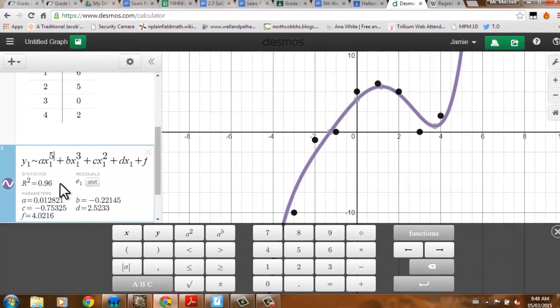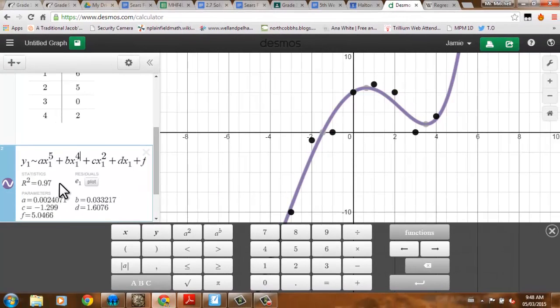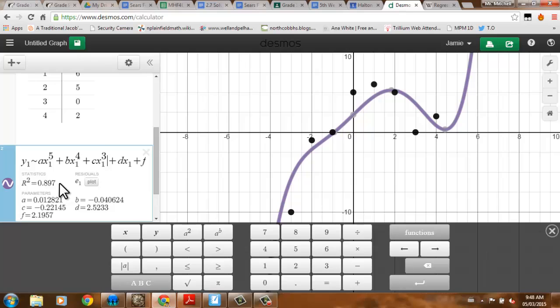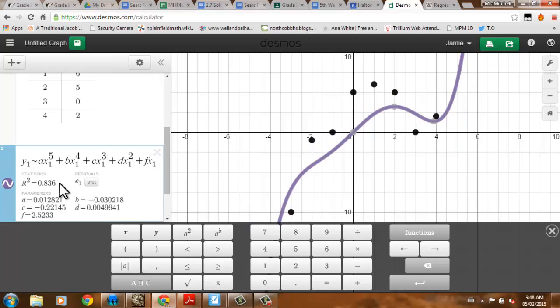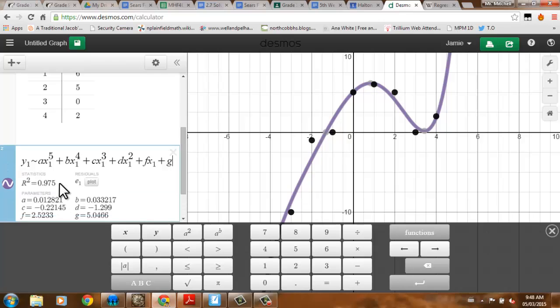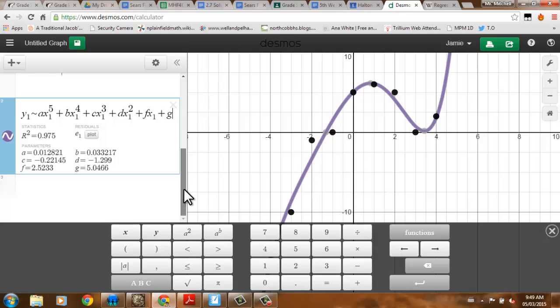My r-squared value is still pretty high, and I can keep going if I want. My r-squared value is getting closer and closer and closer to 1, which is good. This I think is definitely a degree 5 function.